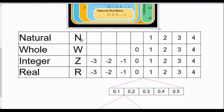Natural numbers really are the first type of numbers that humans would have used. They would have been counting something and would have started counting at one. So this is typically what we would use if you were counting — like sitting on the side of the road counting cars: one car, two cars, three cars, four cars, and so on.